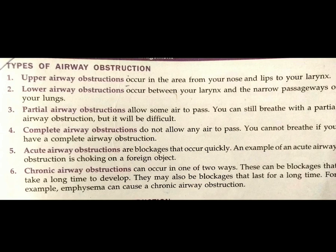Acute airway obstruction refers to blockages that occur quickly — the blockages occur immediately. An example of acute airway obstruction is choking on a foreign object. Chronic airway obstruction refers to blockages that take a long time to develop, such as a disease like emphysema that develops gradually. That is chronic airway obstruction — the patient cannot breathe properly.